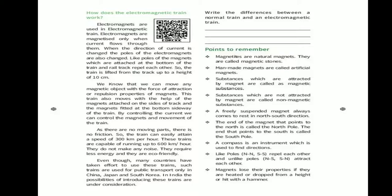Points to remember: Magnetites or natural magnets are called magnetic stones. Man-made magnets are called artificial magnets. Substances attracted by magnets are called magnetic substances. Substances not attracted by magnets are called non-magnetic substances. A freely suspended magnet always comes to rest in the north-south direction. The end pointing north is the north pole; the end pointing south is the south pole. A compass is an instrument used to find direction. Like poles — north-north and south-south — repel. Unlike poles — north-south — attract. Magnets lose their properties when heated, dropped from a height, or hit with a hammer.